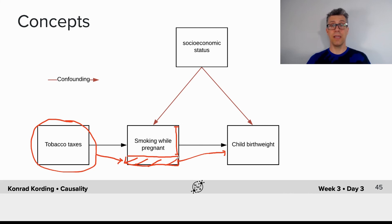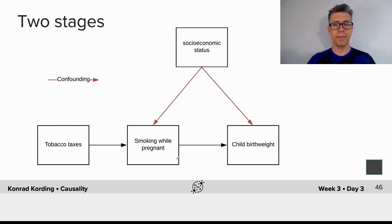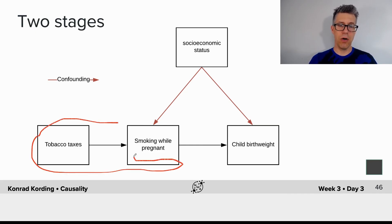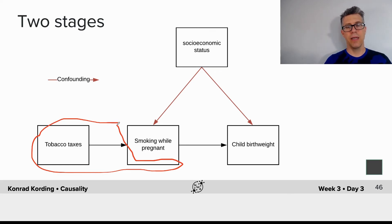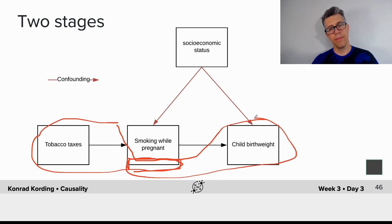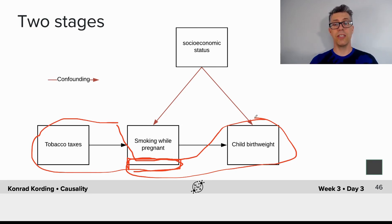Technically, if you're interested in this, this is Julia Paul's vector criterion that we're dealing with. When we use instrumental variables, we effectively do two stages. In the first stage, we model how tobacco taxes affect the chances of smoking while pregnant. Then we take our estimator for this component and use it in a second stage to relate that to actual birth weights of the children. By combining those two stages, it can be shown that you get correct causal estimates. And that's what this section is about.